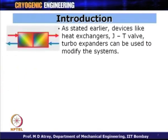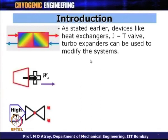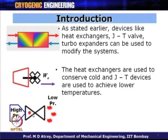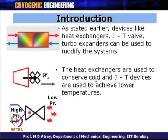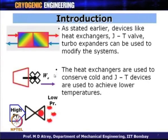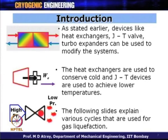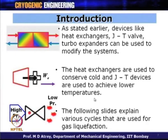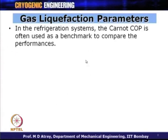It is a two-way heat exchanger with gas coming in from both directions. There are turbo expanders and a JT valve. Heat exchangers are used to conserve cold in the system and JT devices are used to achieve lower temperatures. The following lectures will explain various cycles used for gas liquefaction.